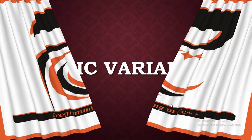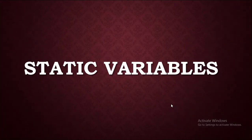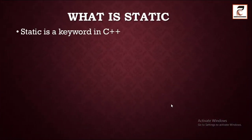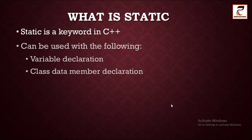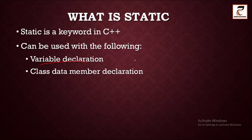Hello friends, today we'll talk about static variables in C++ programming language. Static is basically a keyword in C++. It can be used with variable declarations — for example, when you declare a local variable like int a = 10, you can add the static keyword to make it a static variable: static int a.